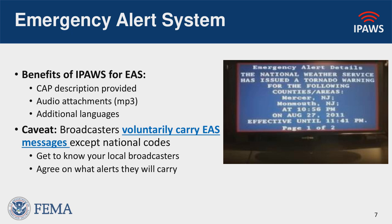Now I'll briefly talk about each of the pathways IPAWS supports. The Emergency Alert System is still out there — you've probably seen a required monthly test aired in your local area. That is a requirement by the Federal Communications Commission, which regulates broadcasters. One important thing to understand: it is voluntary for broadcasters to carry a local public safety notification. So alerting authorities need to collaborate with broadcasters — kind of a new thing for them when moving into using IPAWS.